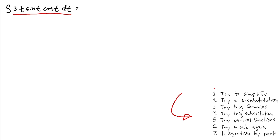So first on our checklist is to try to simplify. When I look at this, we can't really simplify it — there's no formula we can use, no secant or cosecant. It's already in its simplest form. The next step is u-substitution. Now, this looks very tempting, but we have this term here — the t — and that makes things a little more complicated.